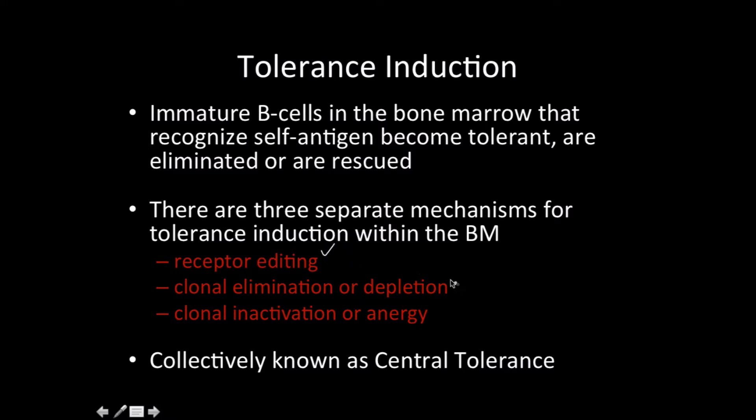These mechanisms are receptor editing, clonal elimination or depletion (really just killing themselves), and clonal inactivation or anergy. All these things collectively are known as central tolerance because this is happening in the bone marrow.